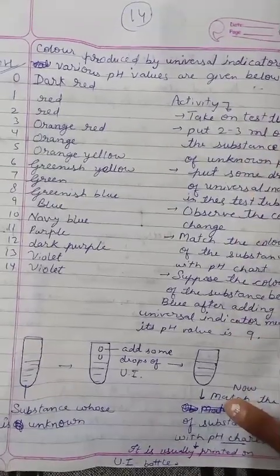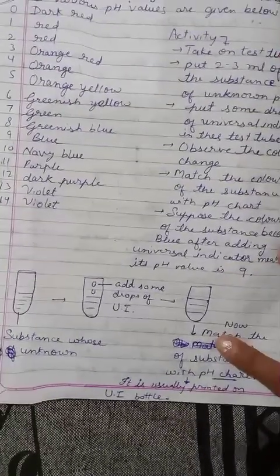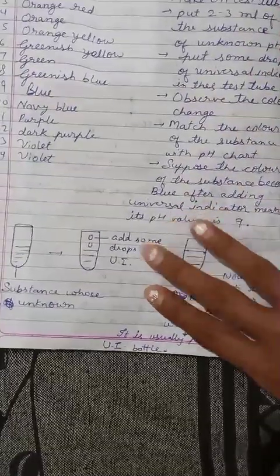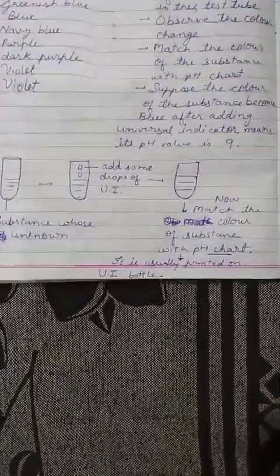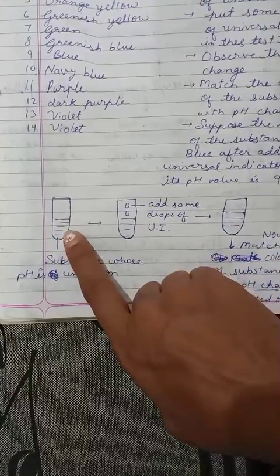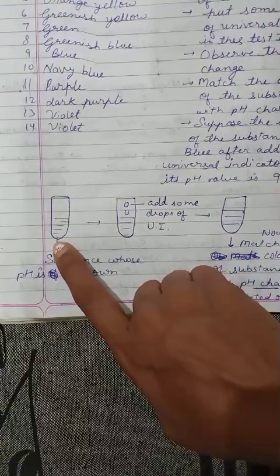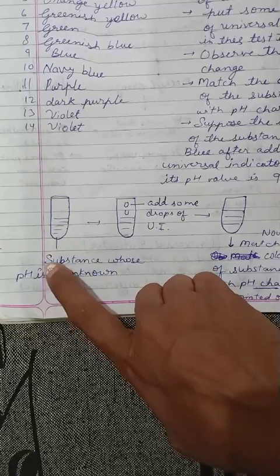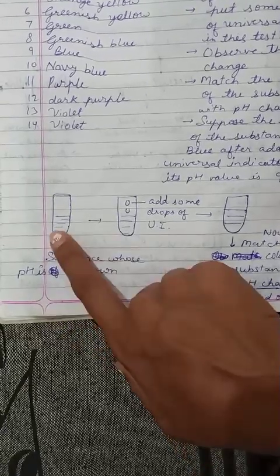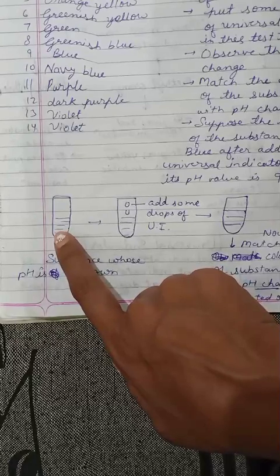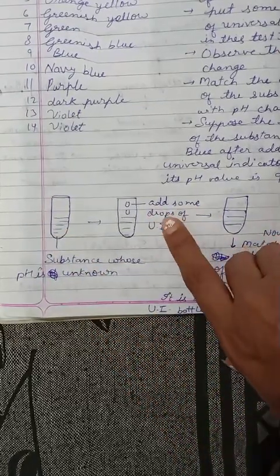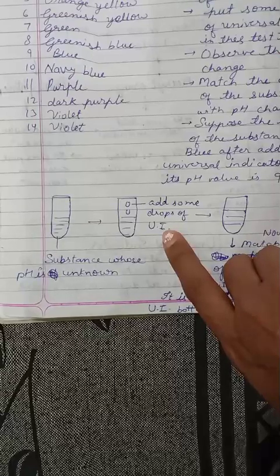I have written a nice activity here. First, we will go through this diagram. This is one test tube — we have taken a test tube and put some substance whose pH is unknown. We don't know the pH in this test tube.